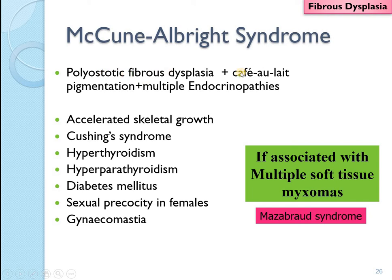To summarize: Jaffe-Lichtenstein is polyostotic fibrous dysplasia with café au lait pigmentation. McCune-Albright is polyostatic fibrous dysplasia with café au lait pigmentation and multiple endocrinopathies. Multiple soft tissue myxomas may also be seen.